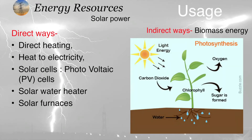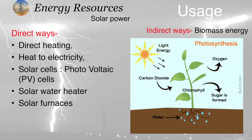For the indirect way, we have photosynthesis. Photosynthesis is the process by which plants convert carbon dioxide and water, in the presence of sunlight, into sugar (glucose) and oxygen. So CO₂ + H₂O reacts to produce C₆H₁₂O₆ and O₂.